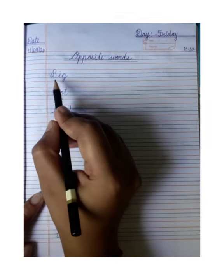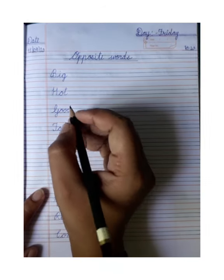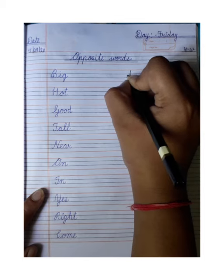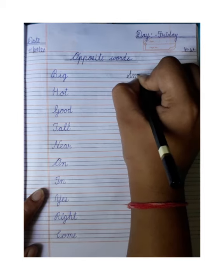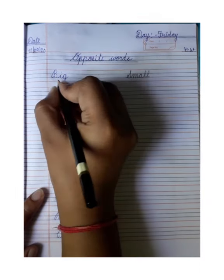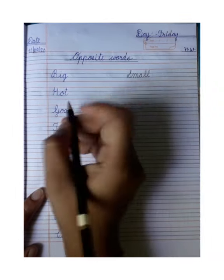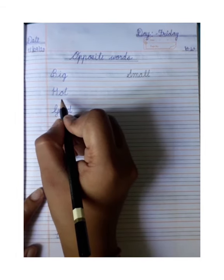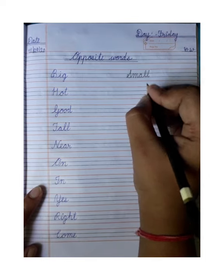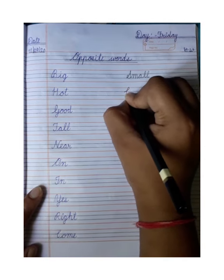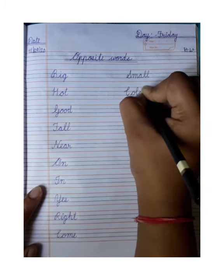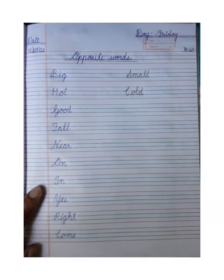First is big — B-I-G, big yani bada. Toh big ka opposite kya ho gaya? Small. We will write S-M-A-L-L, small. Small yani chota. Next, hot — hot yani garam. Hot ka opposite kya ho gaya? Cold. We will write C-O-L-D, cold.